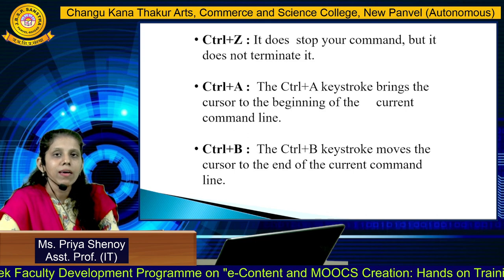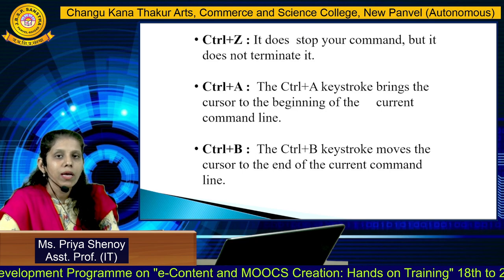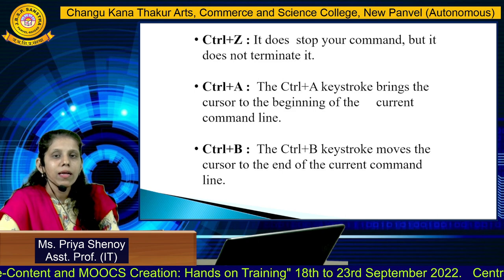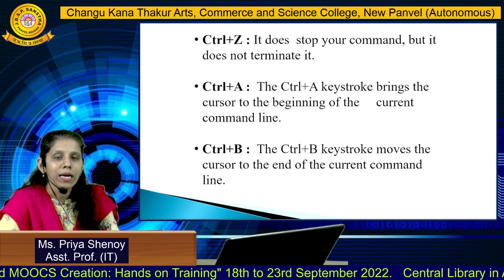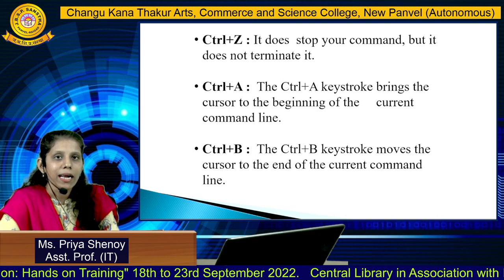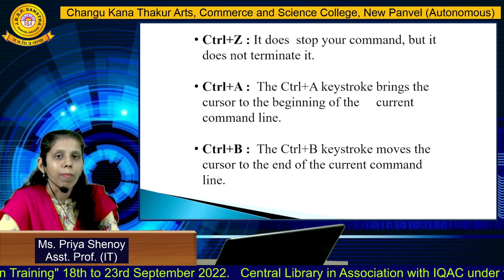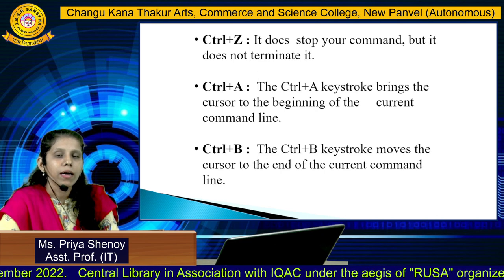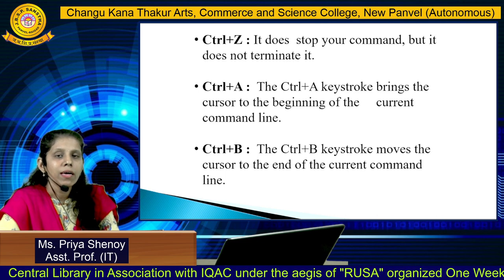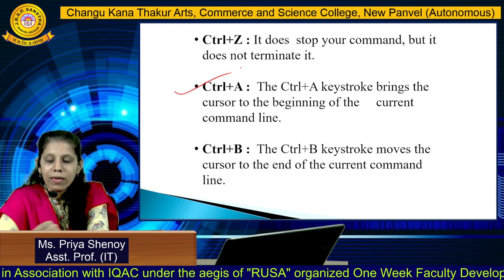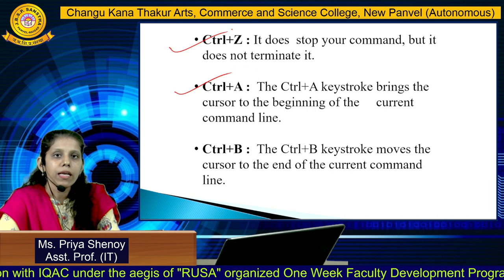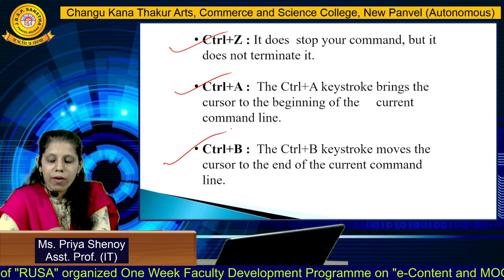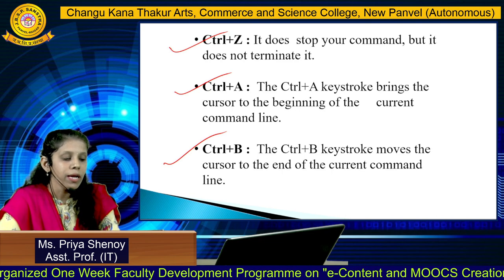The remaining three shortcut sequences are Ctrl+Z, Ctrl+A, and Ctrl+B. Ctrl+Z is used to pause a particular command — remember Ctrl+C quits the command, while Ctrl+Z merely pauses it. That paused command can be sent to the background using the bg command, or brought back to the foreground using the fg command. Ctrl+A moves the cursor to the beginning of the command line, and Ctrl+B moves it to the end.